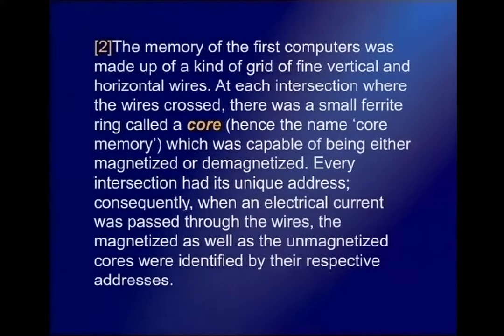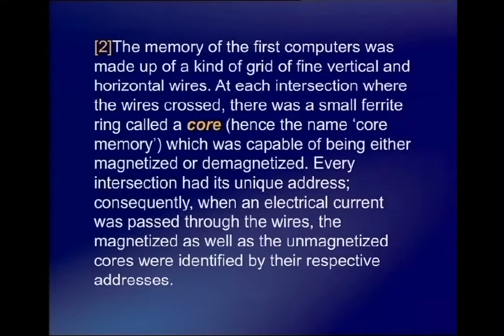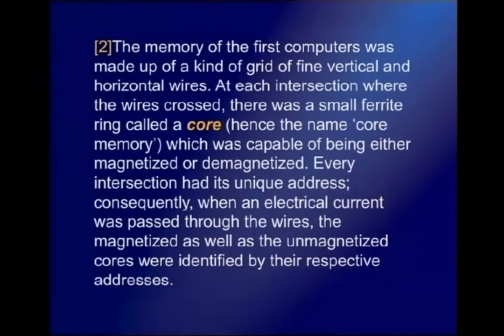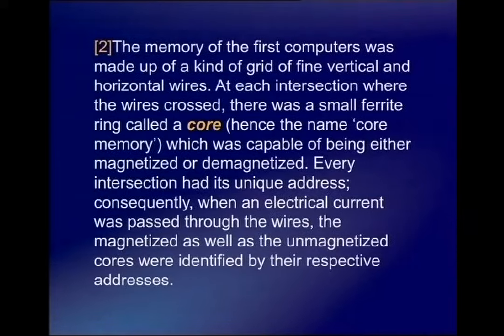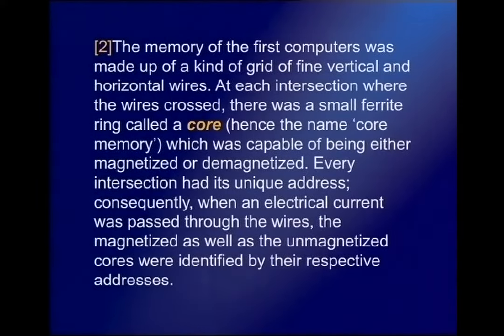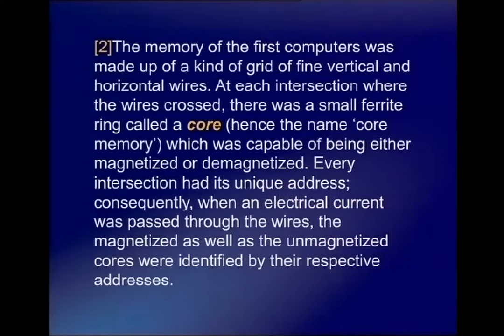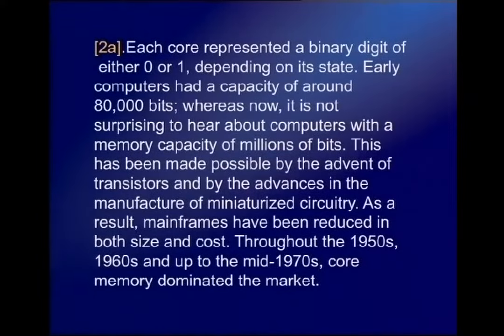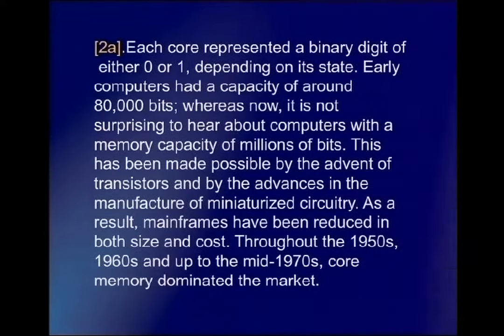The memory of the first computers was made up of a kind of grid of fine vertical and horizontal wires. At each intersection where the wires crossed, there was a small ferrite ring called a core — hence the name core memory — which was capable of being either magnetized or demagnetized. Every intersection had its unique address. Consequently, when an electric current was passed through the wires, the magnetized as well as the unmagnetized cores were identified by their respective addresses. Each core represented a binary digit of either 0 or 1, depending on its state.